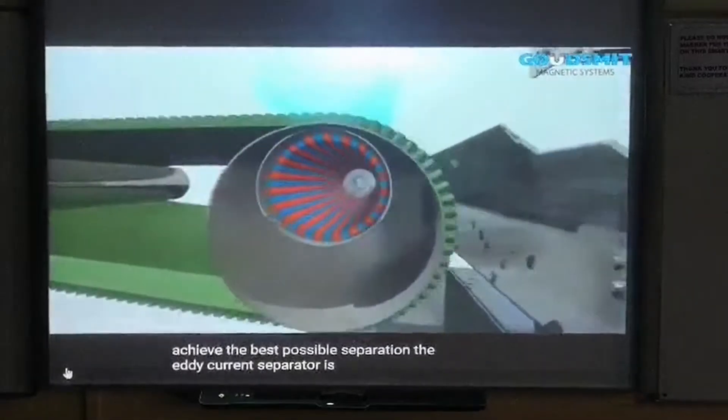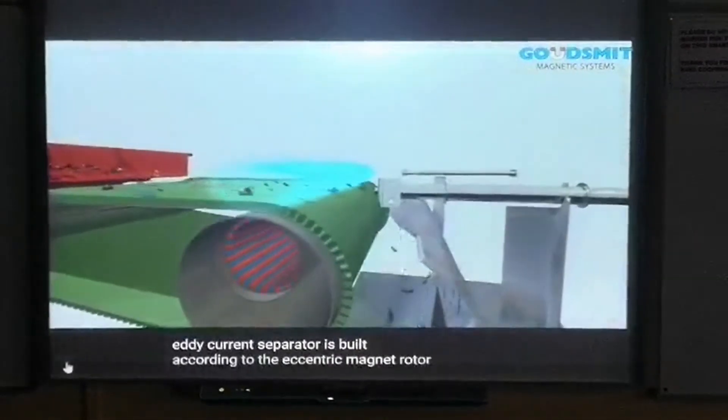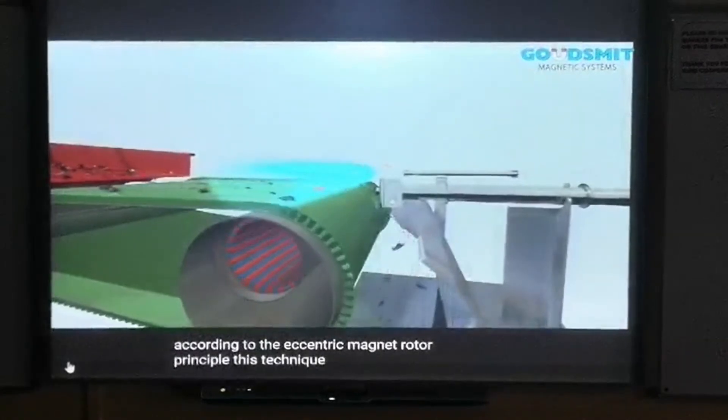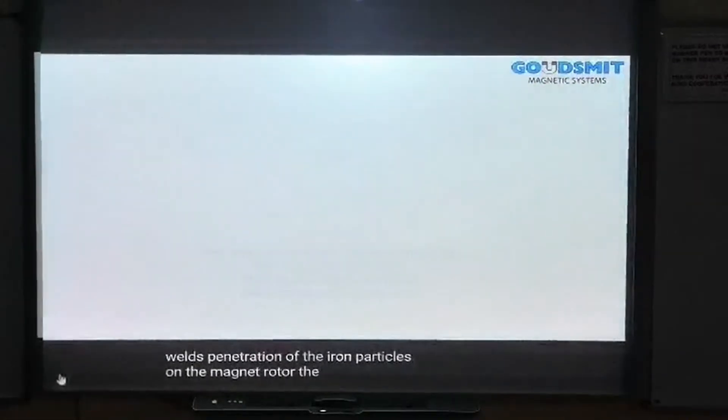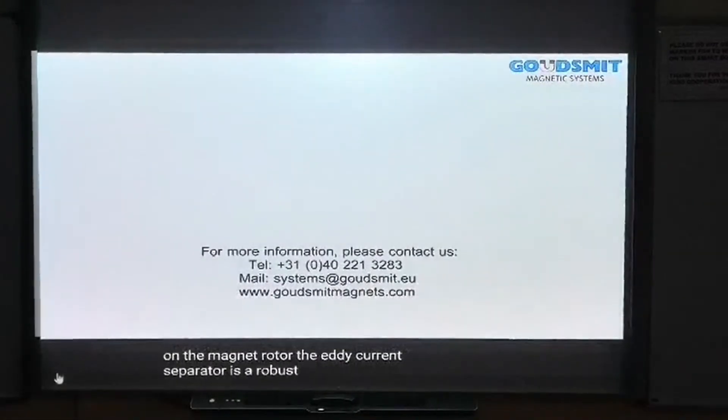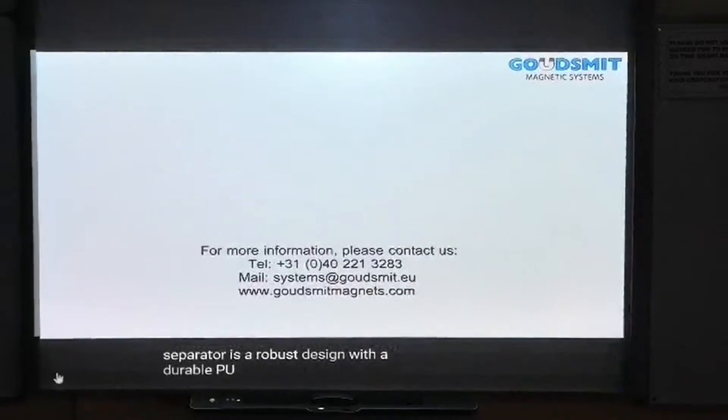The eddy current separator is built according to the eccentric magnet rotor principle. This technique prevents the weld's penetration of the iron particles on the magnet rotor. The eddy current separator is a robust design with durable PEU conveyor belts.